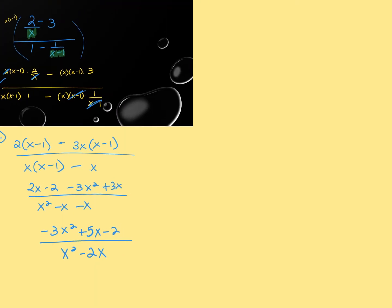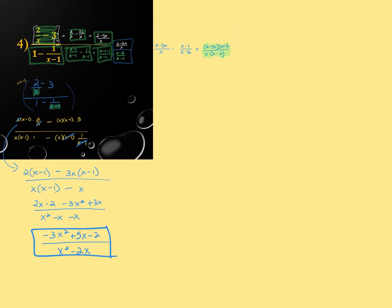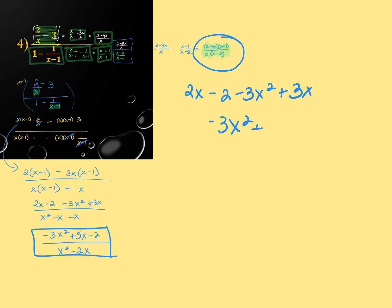Both methods give the same answer, just in potentially different formats. If you FOIL out the first method's answer, you'd get the same expression as method two. Homework-wise it's okay to leave the factored form. On a test I'll let you know about format. Both are correct even if in different formats.